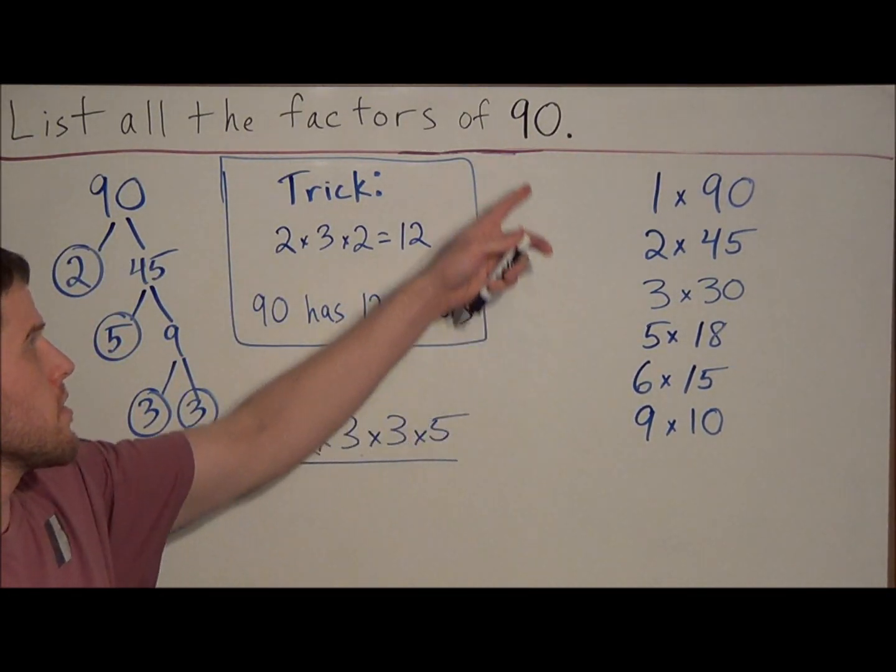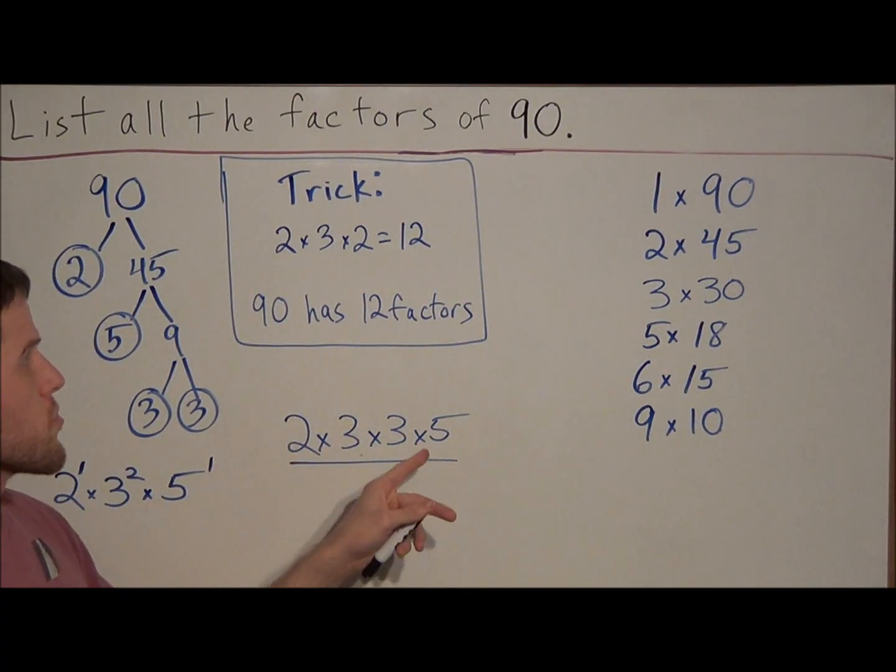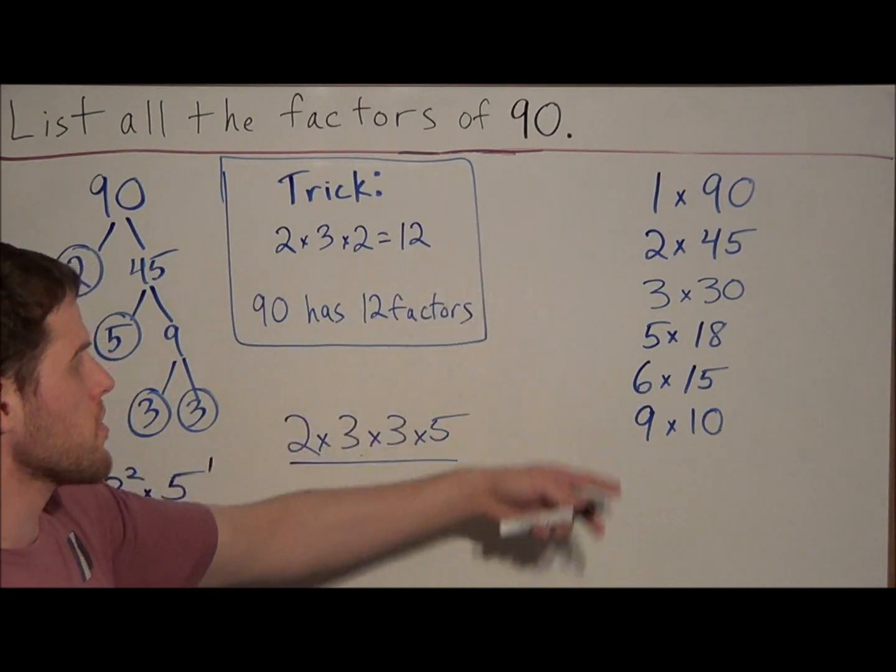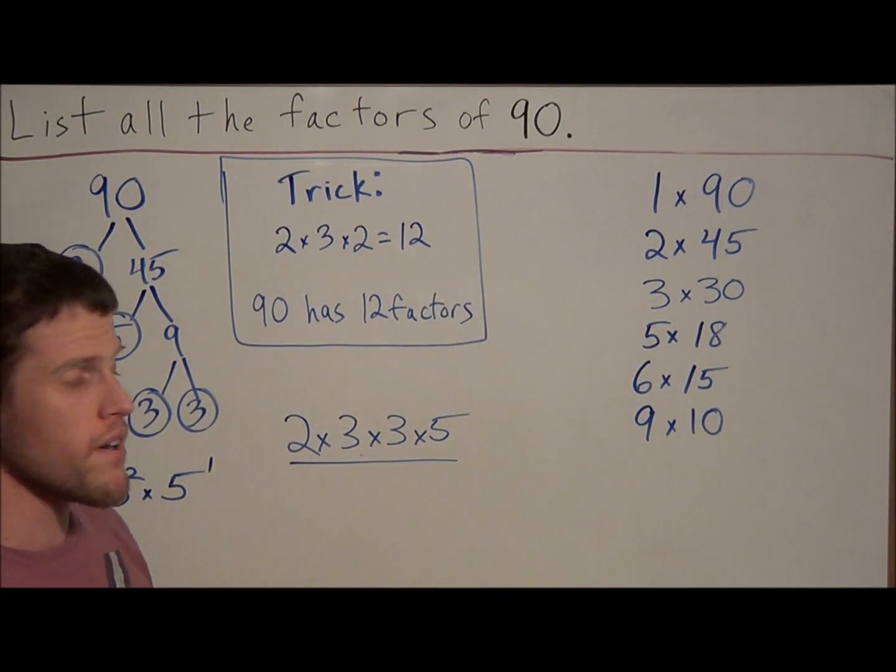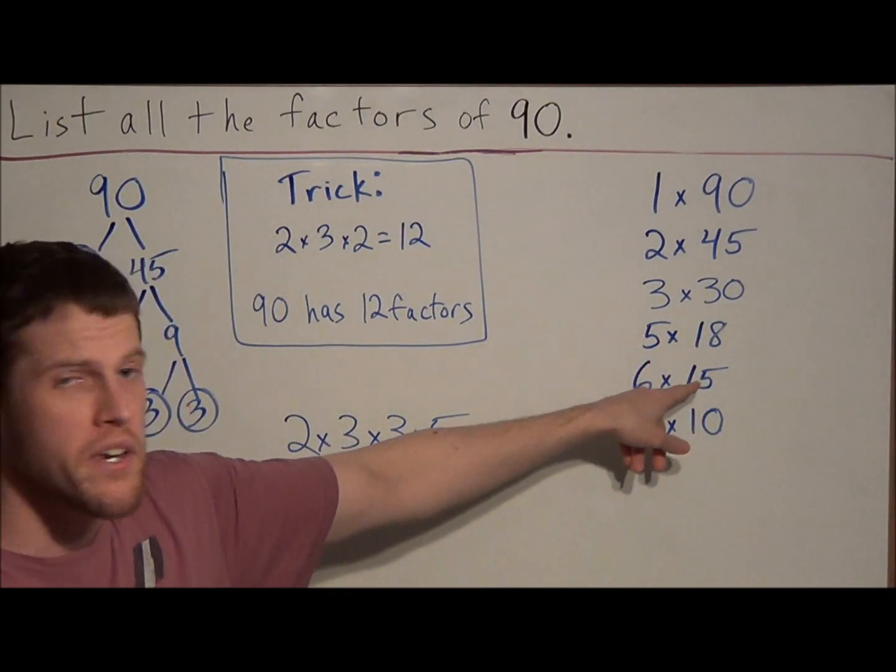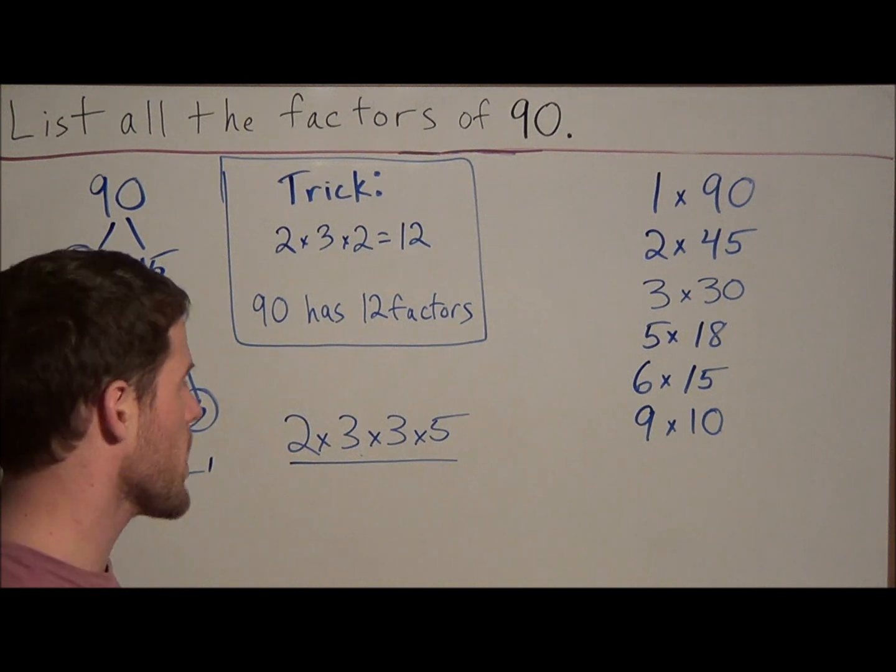So we could check 11. 11 is not going to divide into 90, because it's not in our prime factor string here. 12 is not going to divide into 90. And then by then, when we try 13 and 14, we know those numbers won't divide into 90. But we've reached the point where we're repeating numbers. Once we get to 15, we already listed 15. So we know we have all the factors.